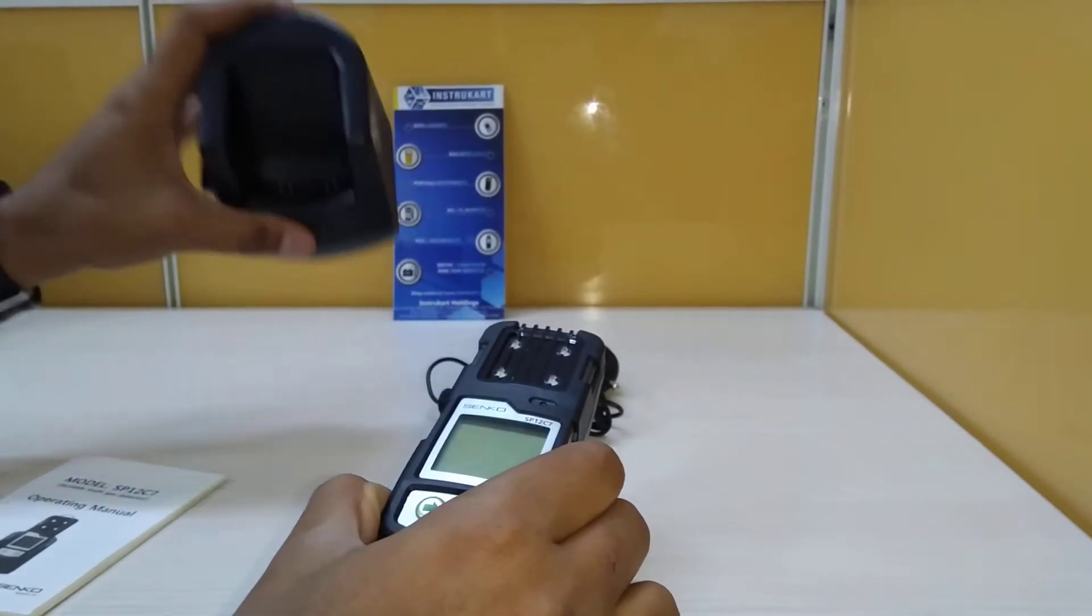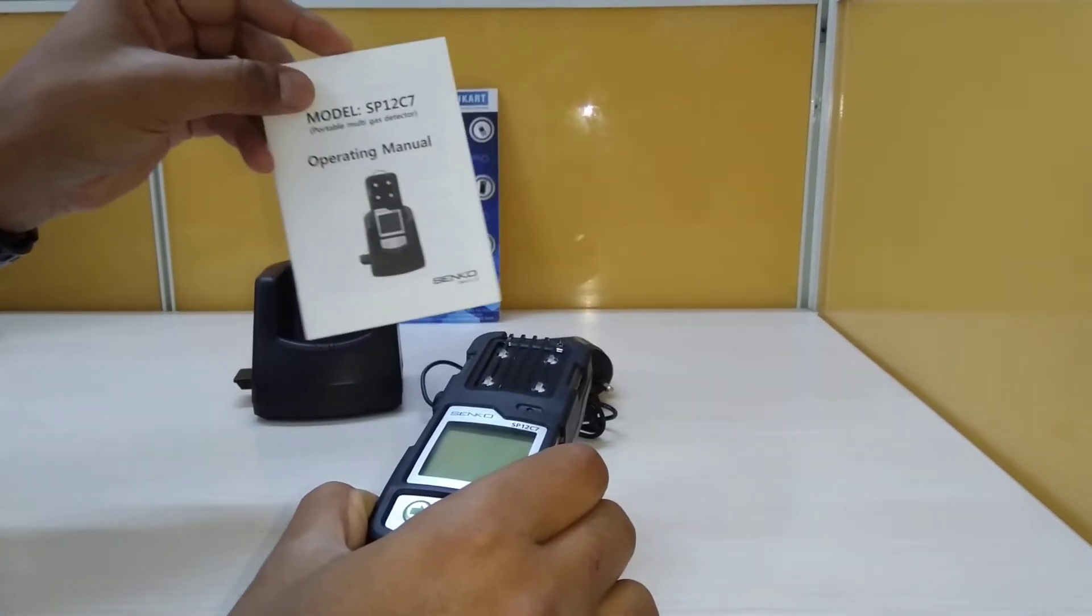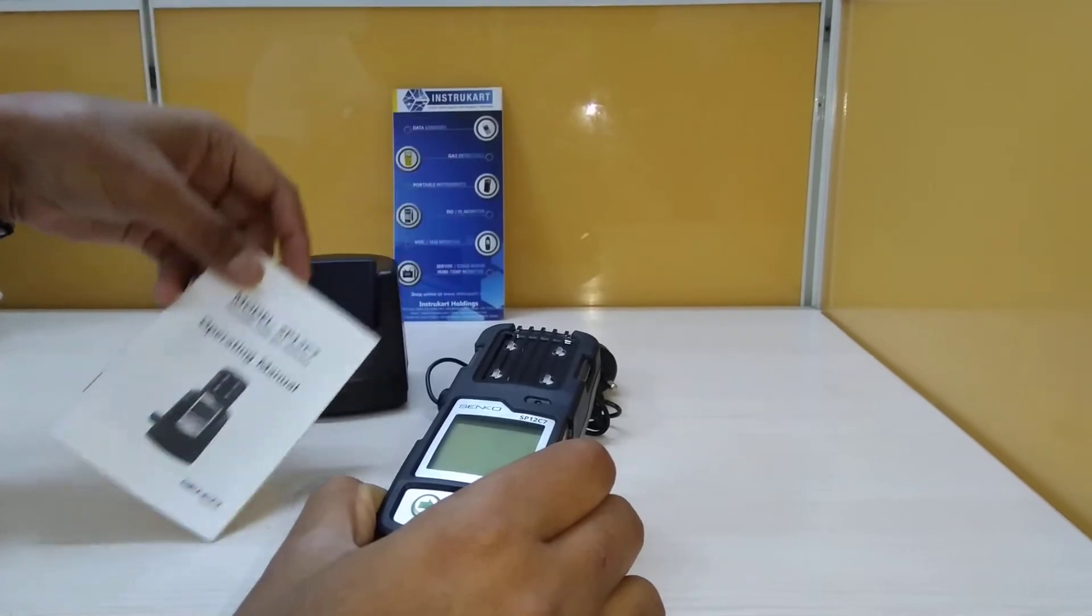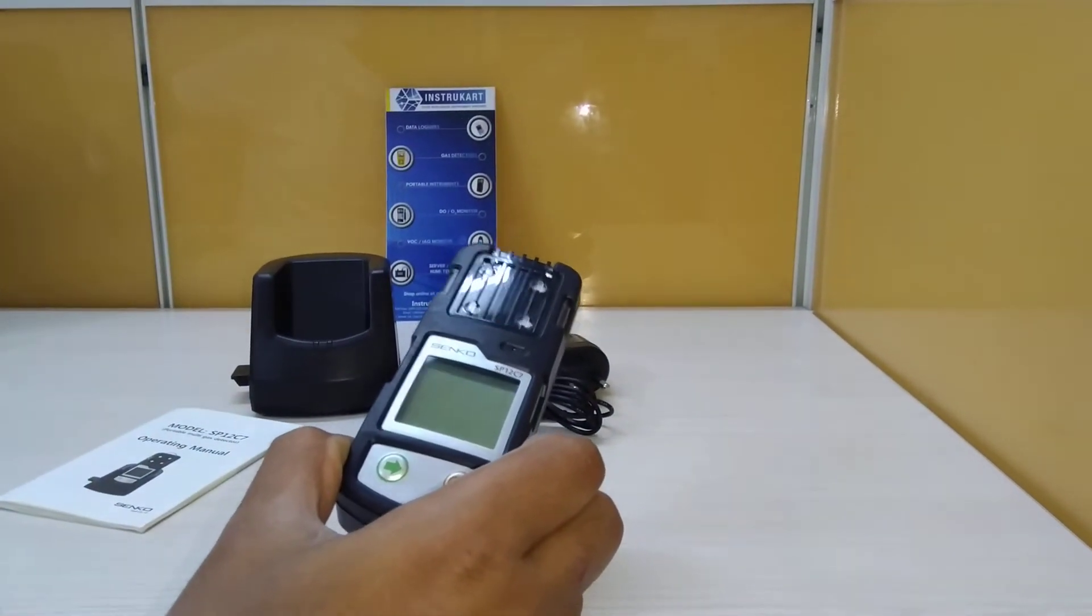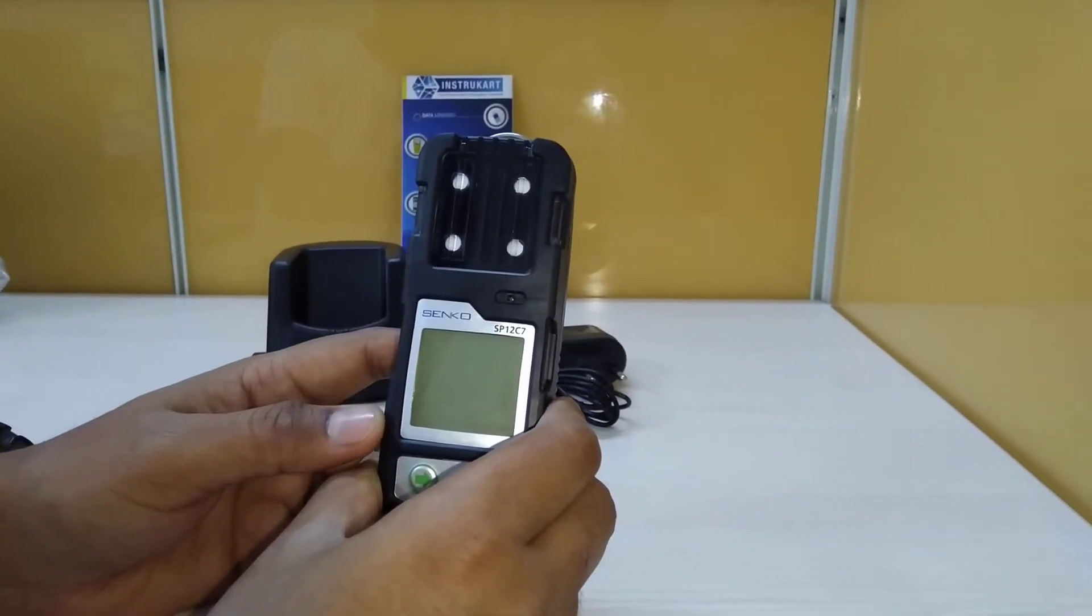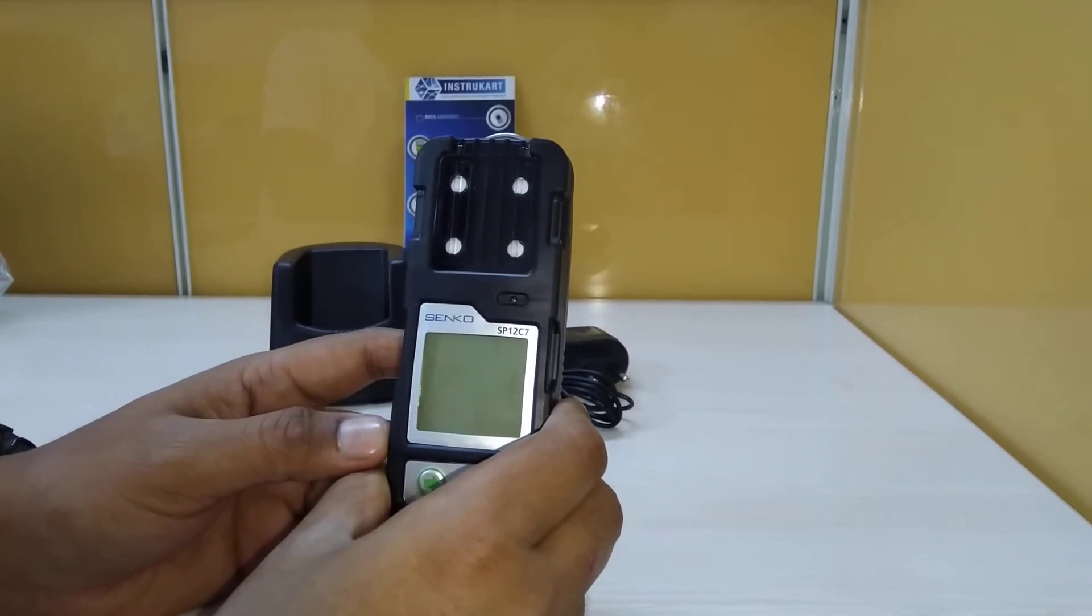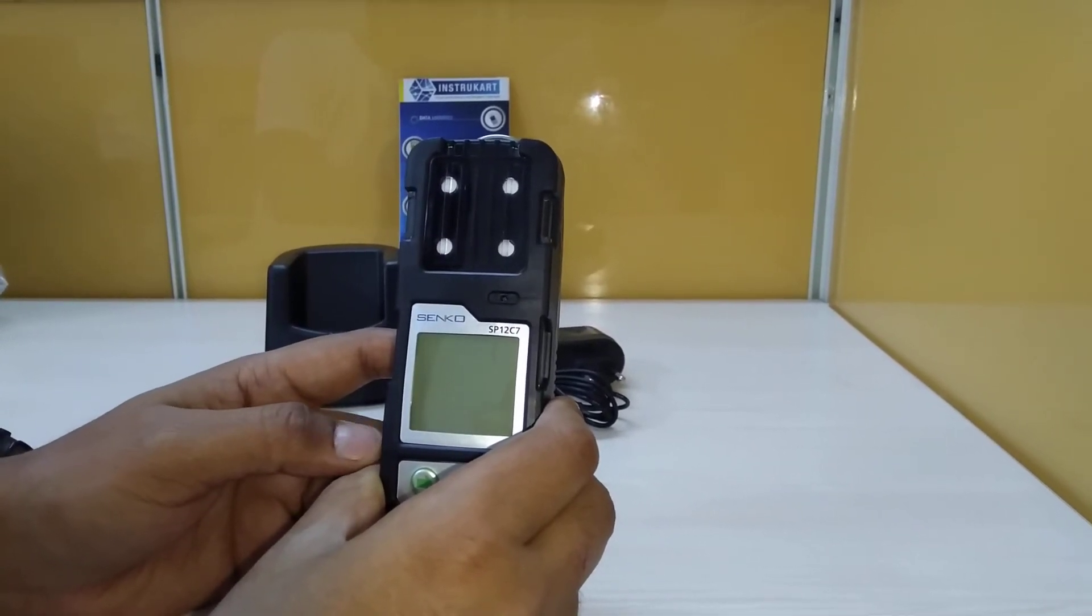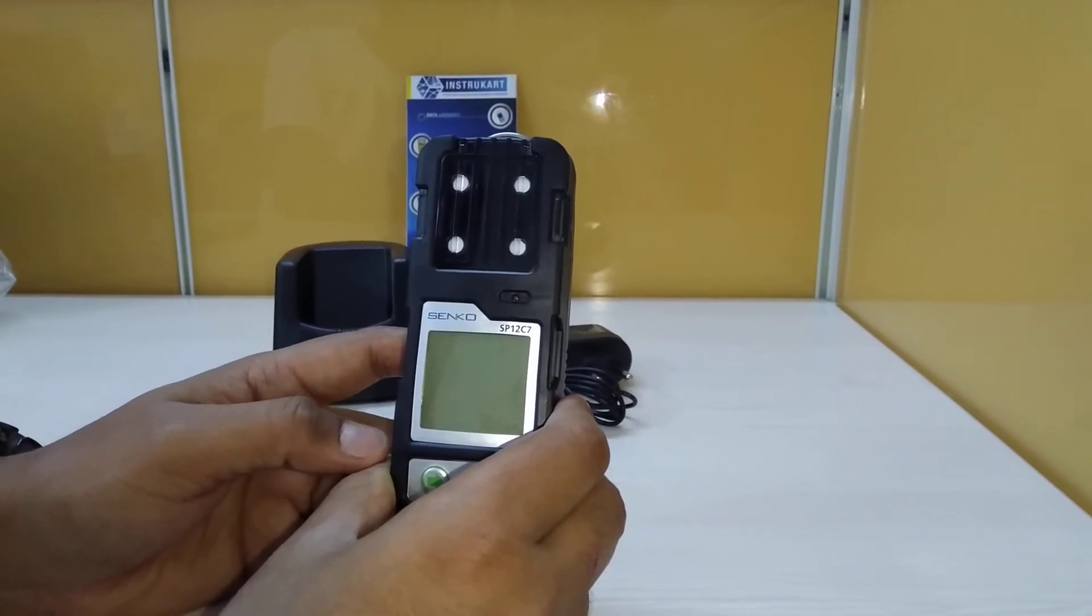The measuring range for this instrument is 0 to 30 percent for oxygen, 0 to 100 percent LEL, 0 to 500 ppm for carbon monoxide, and 0 to 100 ppm for hydrogen sulfide.